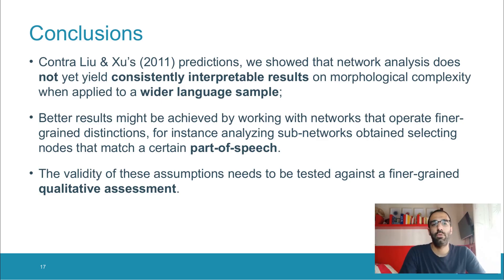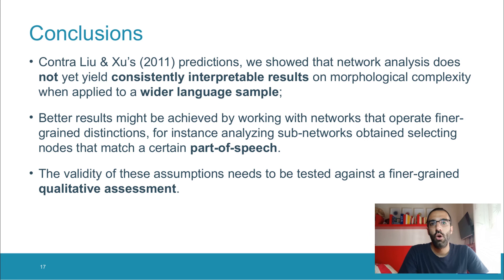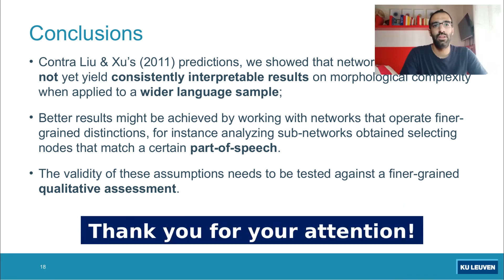In conclusion, in this presentation we show that network analysis does not yield consistently interpretable results on morphological complexity when applied to a wider language sample. A possible way in which this research could be extended would be the analysis of networks that operate on a finer-grained level, such as networks that consider the distinction among parts of speech. Although some of the results are in part encouraging, the proposed correlations between network indexes and the language's analyticity index need to be tested against a finer-grained qualitative evaluation. Thank you everybody for the attention.